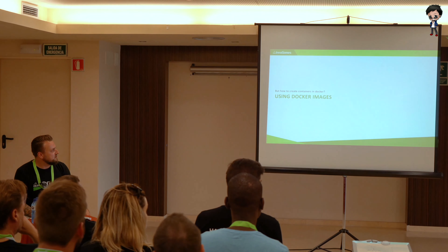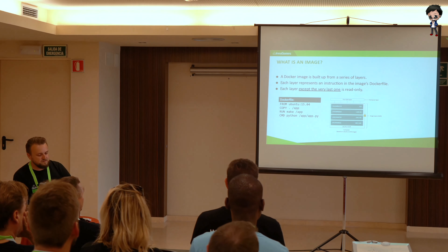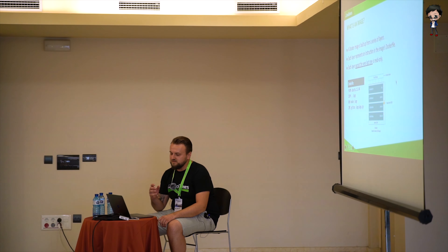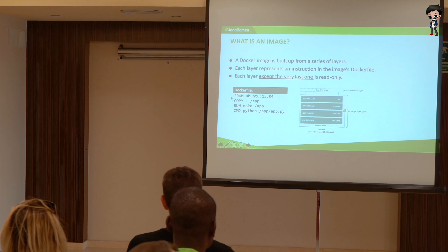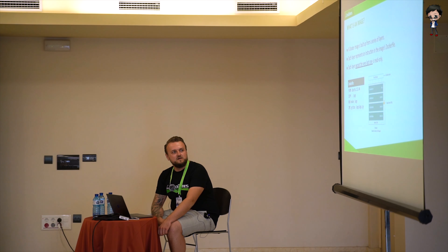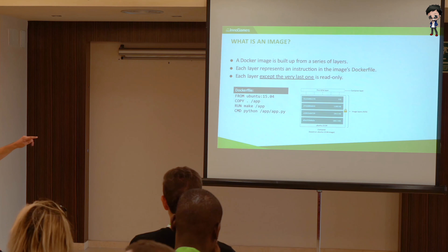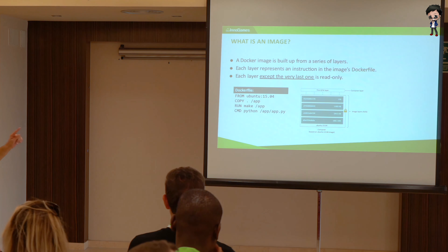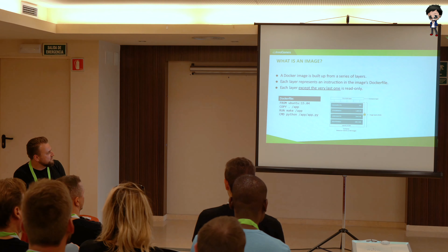How can we create those containers with Docker? The keyword there is images. Images are built up from several layers. As you can see at the image on the bottom, each layer represents an instruction in our Dockerfile. I have a small Dockerfile here which is inheriting from an existing Ubuntu image with version 15.04. The next command is copying something from the working directory to slash app in the container, then we are running a command — we are making the app. CMD means that is the command the container executes when it starts. So we have basically four layers here, and you can see each command has one layer.